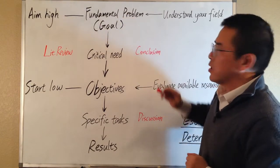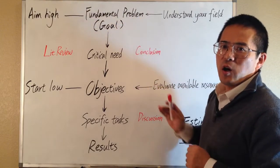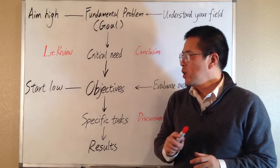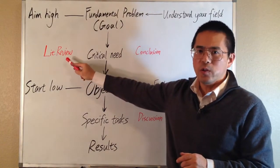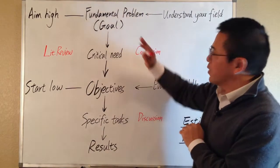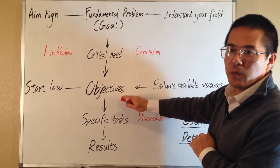It is common that the significance of the fundamental problem or the overall goal has already been well recognized by the research community. Therefore, in your literature review, your main task is often to provide your special angle for solving the identified problem by proposing your specific research objectives.